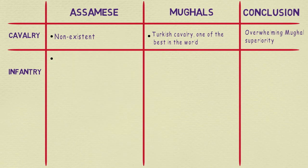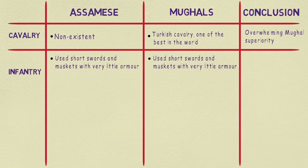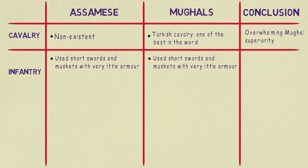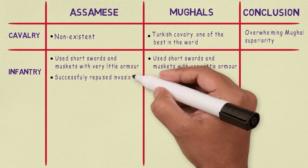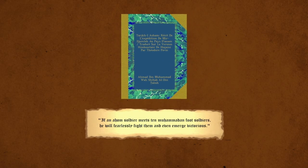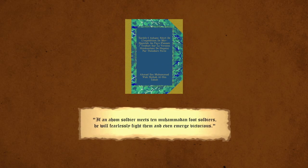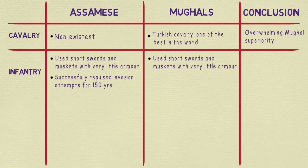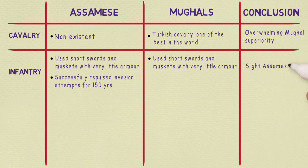Moving on to infantry: both the Mughal and Assamese foot soldiers used short swords and matchlock muskets but wore little to no armor. So equipment-wise they were pretty even. However, the Assamese soldiers of the Ahom kingdom had successfully repulsed multiple invasion attempts by the Delhi Sultans for more than 150 years. The Mughal writer Ibn Muhammad Wali Ahmad in his book Tarikh-i-Assam observed that 'if a single Ahom soldier meets 10 Mohammedan foot soldiers, he will fearlessly fight them and even emerge victorious.' Obviously there is some exaggeration, but the Mughals clearly respected Ahom capabilities.